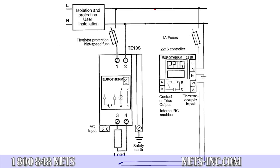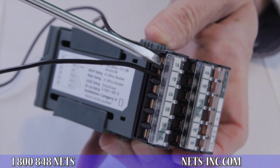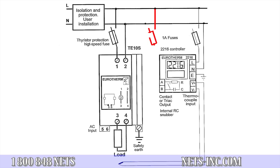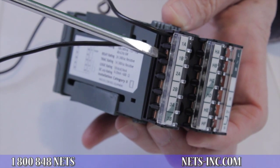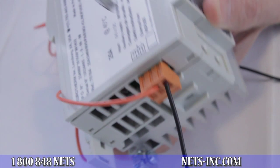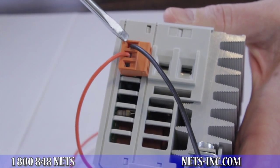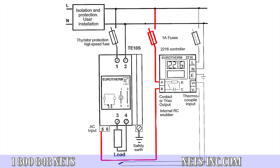In the wiring diagram shown, we are using a Eurotherm 2216E temperature controller and a Eurotherm TE10S power controller with an AC input command signal. First, wire your line voltage to terminal 1A of the temperature controller. Next, terminal 1B is the switched line voltage signal through either the relay contact or triac in the temperature controller. This wire from terminal 1B will be wired to the positive side of the input command on the power controller, which is terminal 5 in this example.